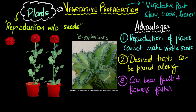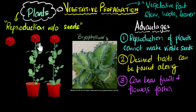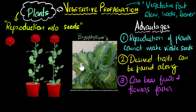To summarize: vegetative propagation is asexual reproduction in plants where we use the vegetative parts — like stem, roots, and leaves — to grow new plants, so it's reproduction without seeds. It's perfect for plants that cannot make viable seeds, like roses, bananas, sugar canes, or jasmine. One important example for exams is Bryophyllum, which makes tiny plantlets from the tips of its leaves; the leaf falls to the ground and new plants grow from those plantlets. And because reproduction is asexual, desired traits can be passed along, and because germination is skipped, plants can bear fruits and flowers faster.